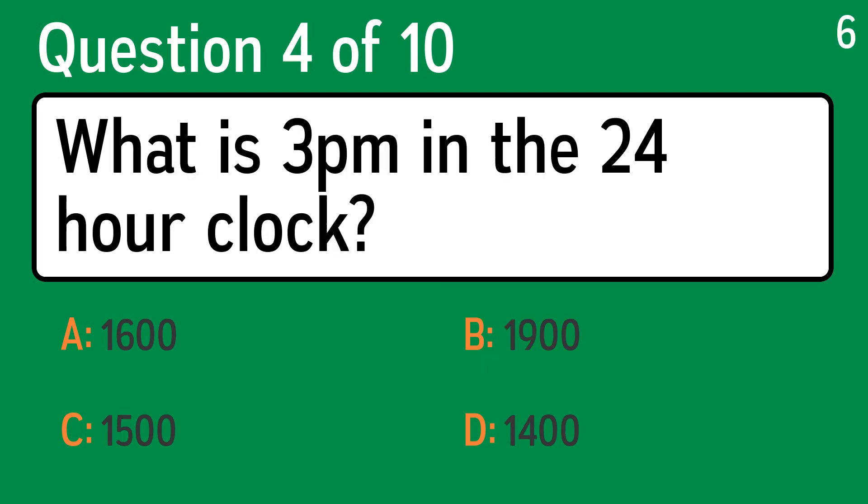Question four, what is 3 p.m. in the 24-hour clock? The correct answer is C, 15:00.